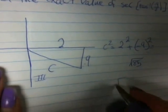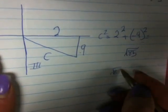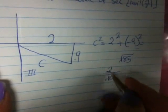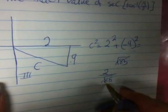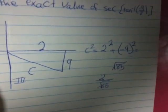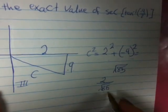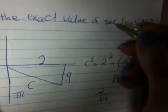Now we find our cosine. Our cosine is 2 over root 85. So we find our cosine like 2 over root 85.